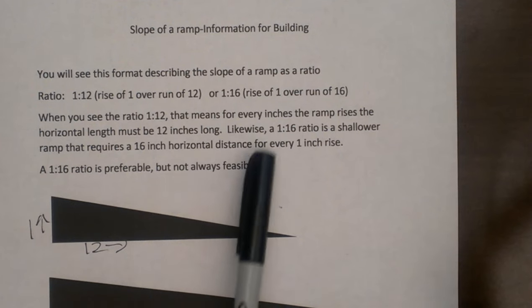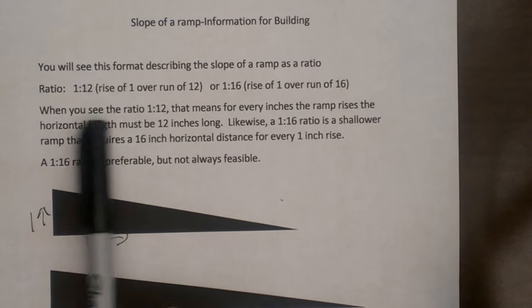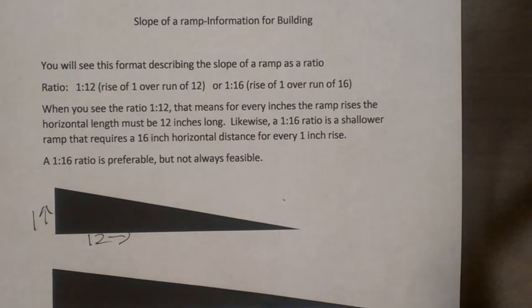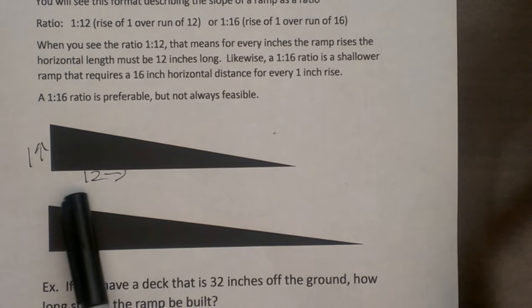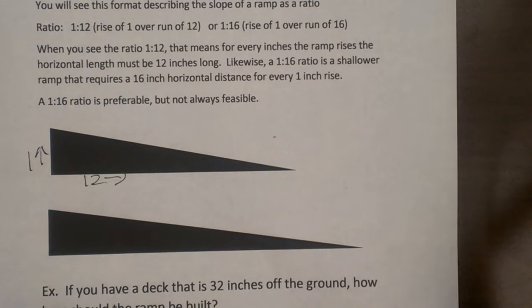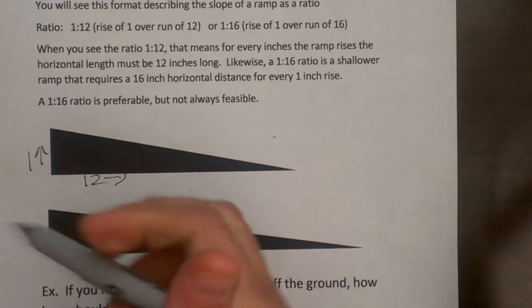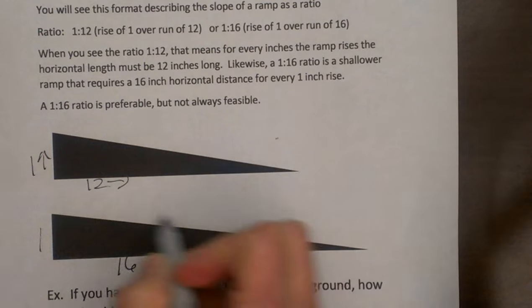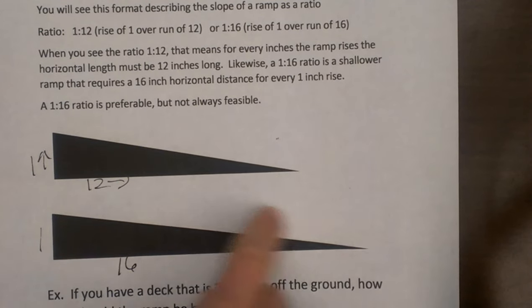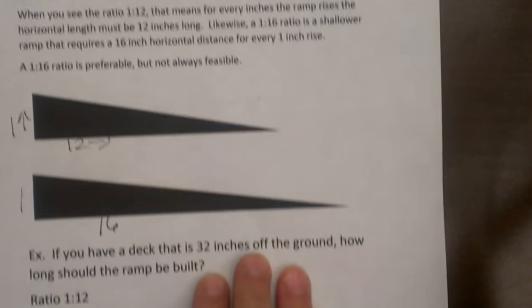Those are the two kind of options that we are shooting for. In general we prefer a 1 to 16 ratio because the ramp of a 1 to 16 ratio is not as steep. It is a little more shallow, so it is a little bit easier to pull things up the ramp with this shallower ramp angle.